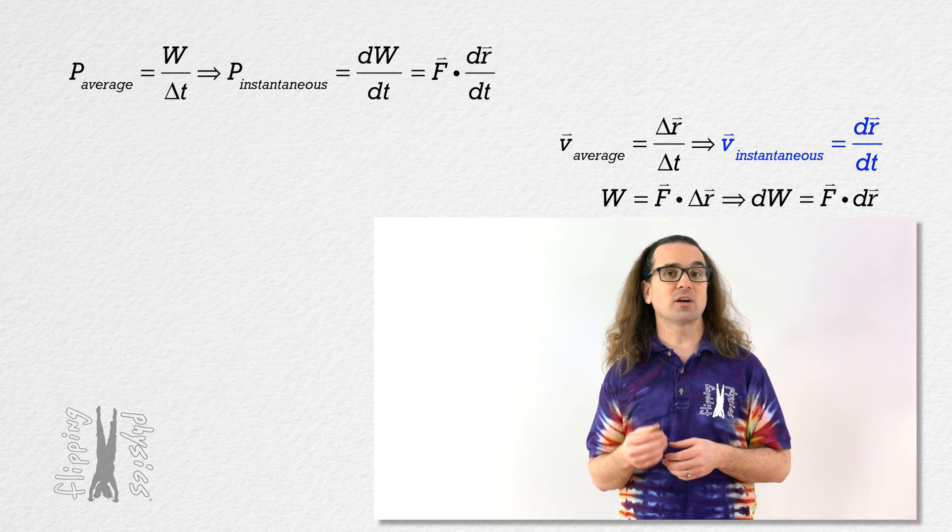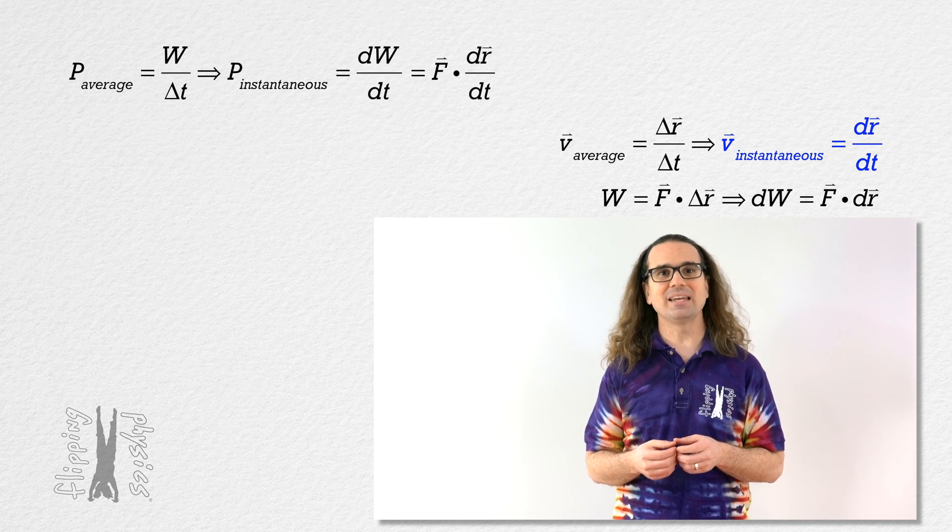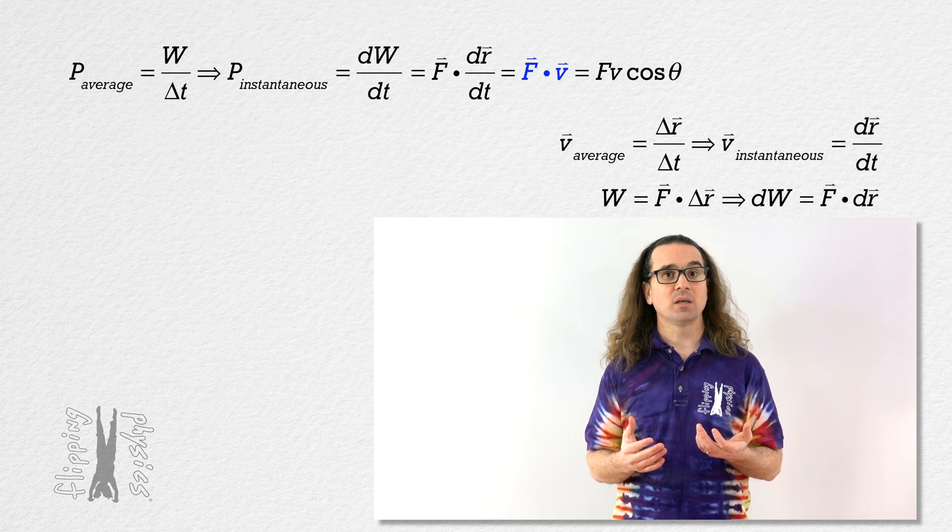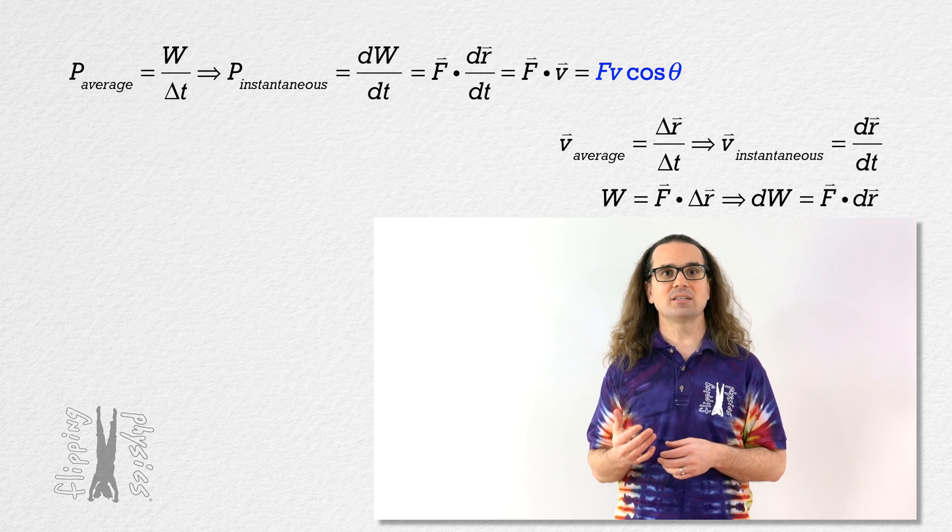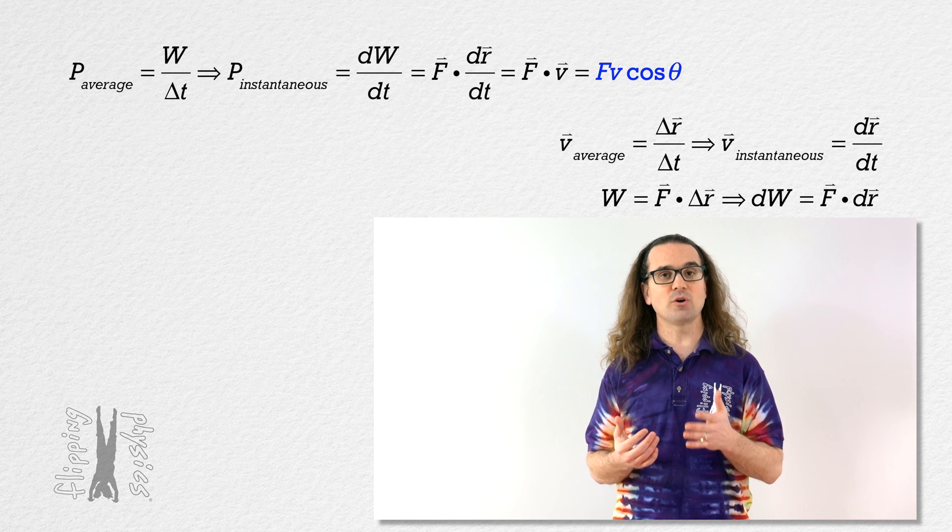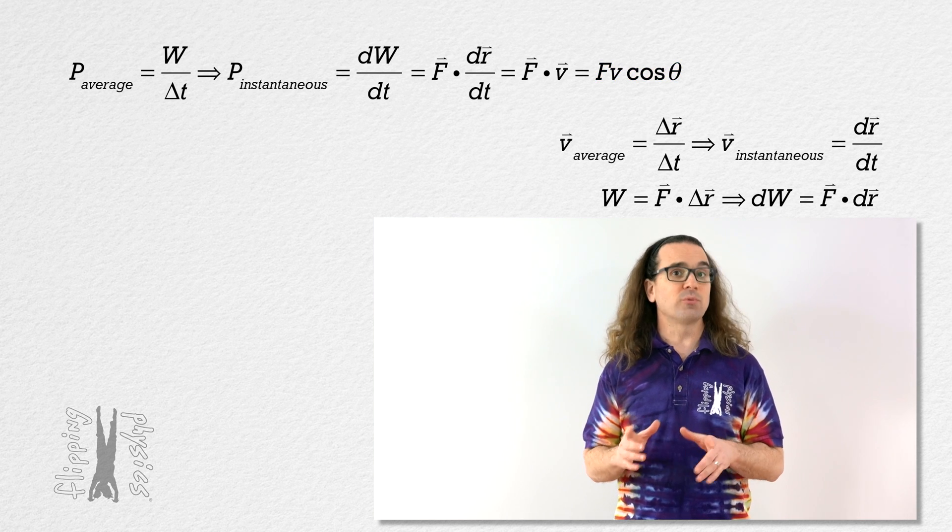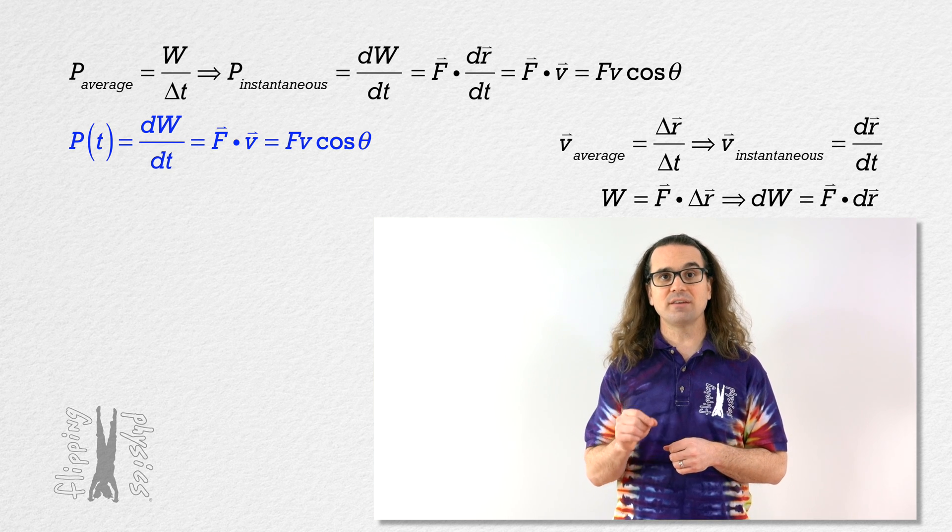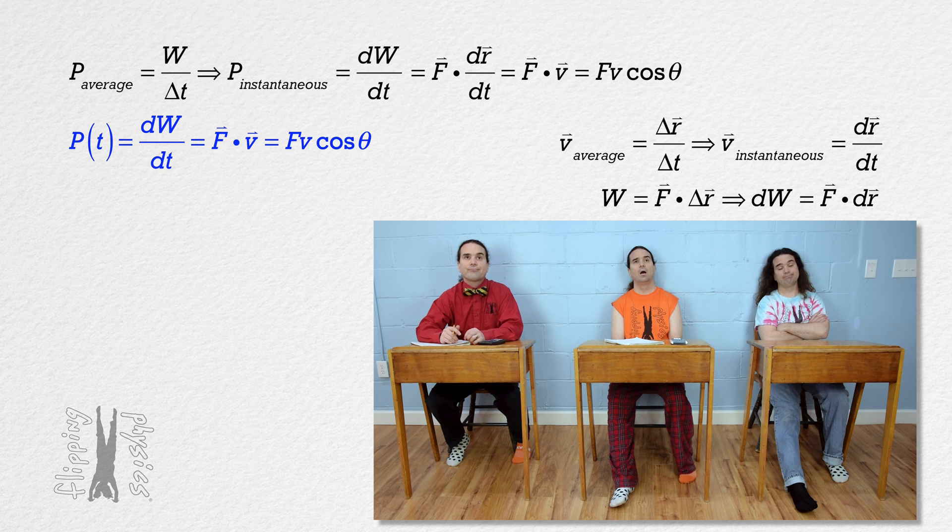Therefore, we now have another equivalent equation for instantaneous power. It equals the dot product of force and velocity, which also equals F·v·cos(θ), where θ is the angle between those two vectors. And realize, because this is instantaneous power, it is also the power delivered to an object as a function of time.